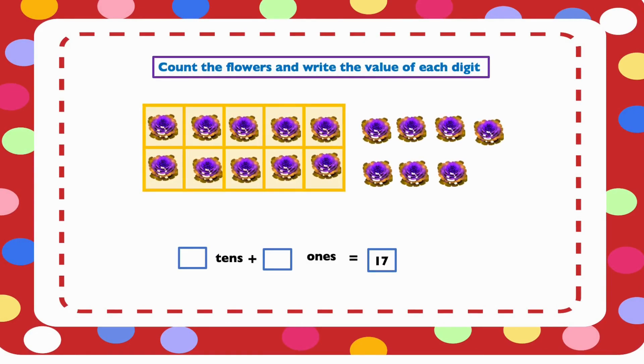Count the flowers and fill in the missing numbers. We have 17 flowers. 17 is a 2 digit number, and we want to find out the value of each digit. What is the value of 1 and what is the value of 7? Now let's find out by counting the flowers.